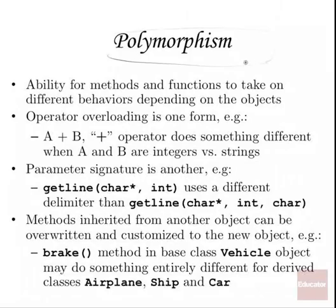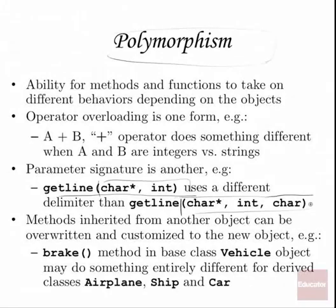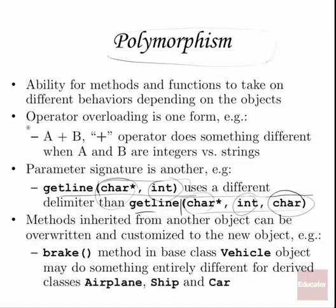And then finally, polymorphism — that's the ability for methods and functions to take on different behaviors depending on the object. We've seen a little bit of this in terms of function calls. For example, with getline, if you've got just two parameters, that means you have a character string and an integer for the limit. If we add an additional parameter, that's a slightly different definition for getline — now we have a different definition for the delimiter. Operator overloading — you've seen that even in procedural languages, where you've got a plus b.